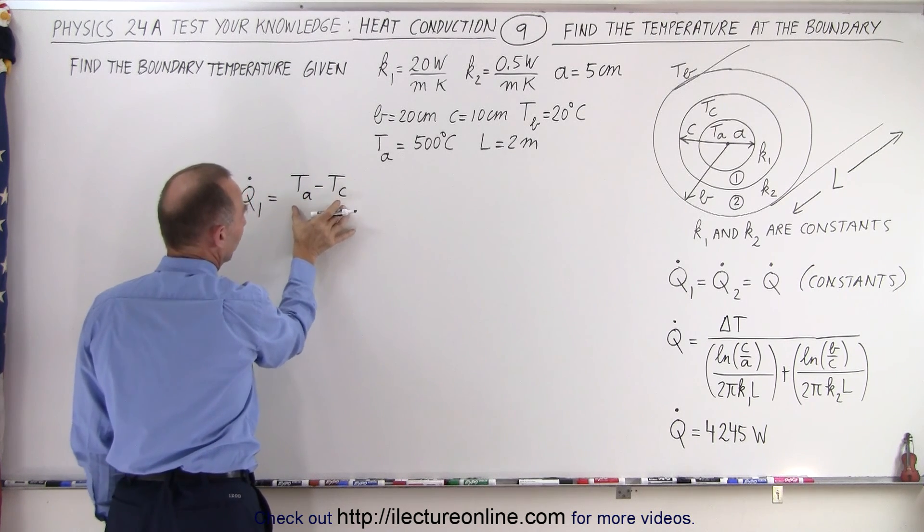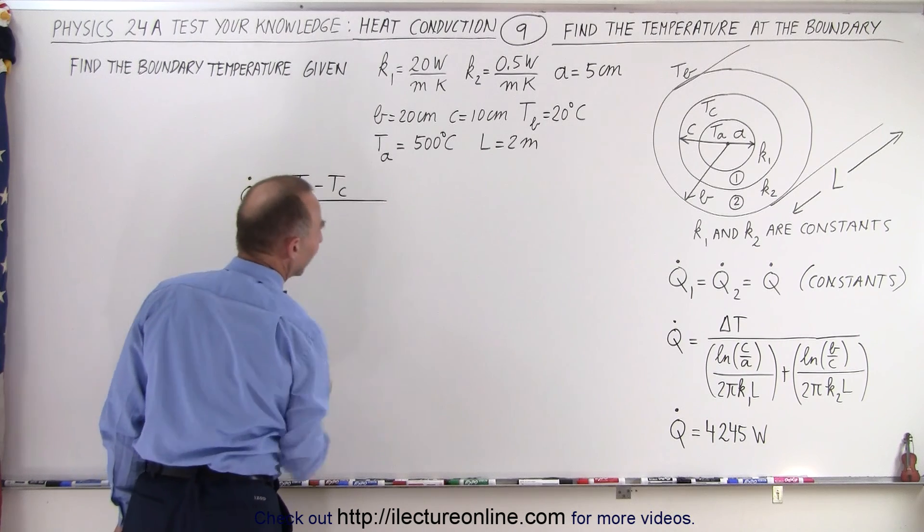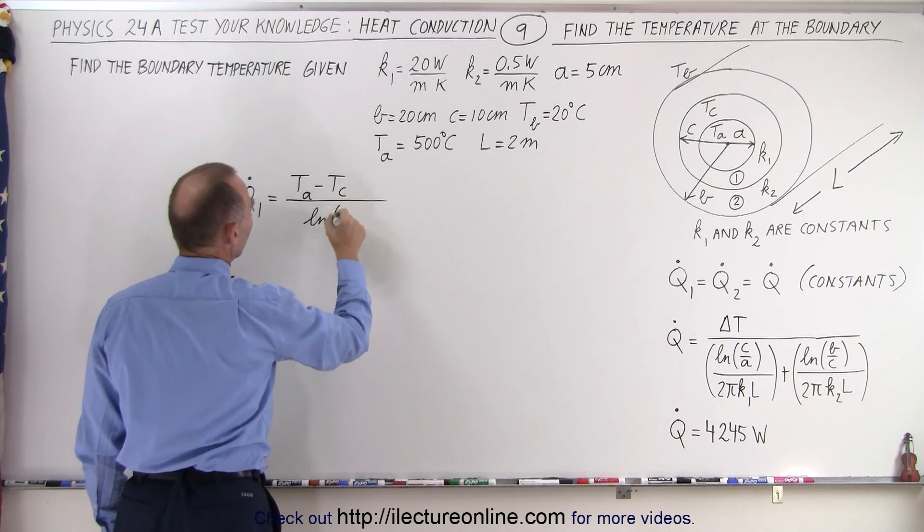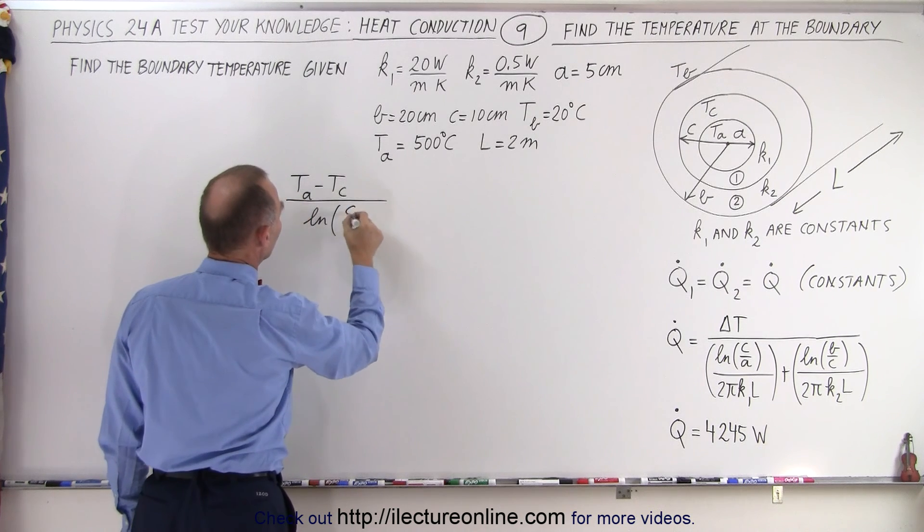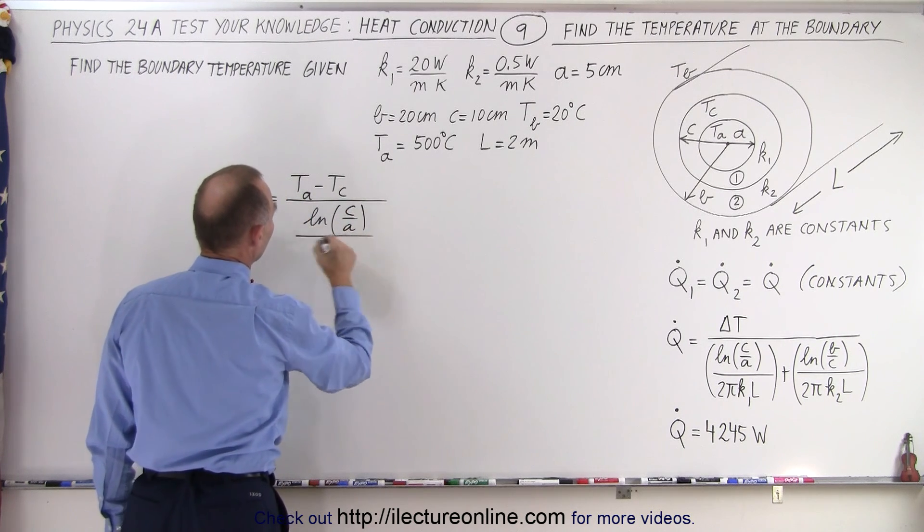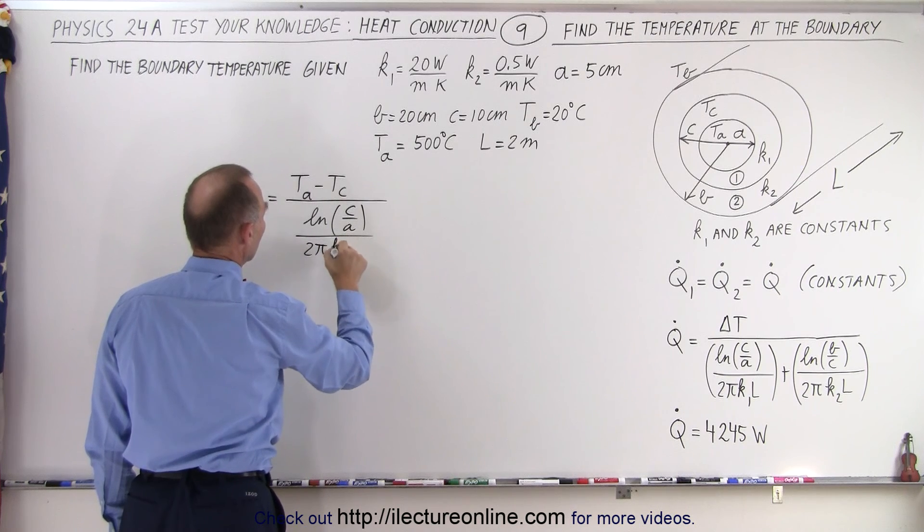And of course that's what we're looking for, the difference in the temperature, divided by the natural log of, in this case that's going to be equal to C over A, divided by 2πK₁L.